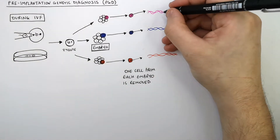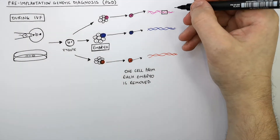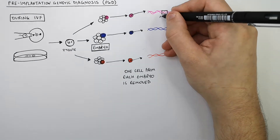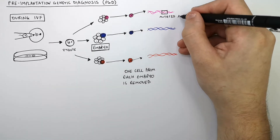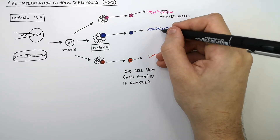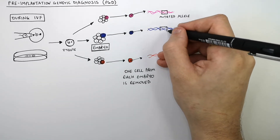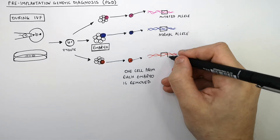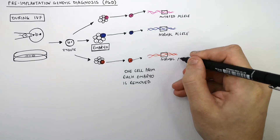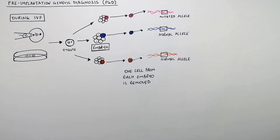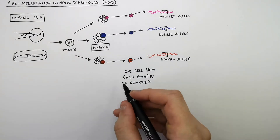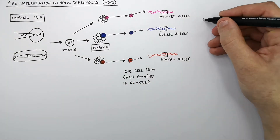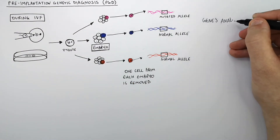And in this cell from this embryo, the DNA shows a mutated allele. Whereas in this cell from this embryo, there is a normal allele. And there's a normal allele in this embryo too. So they remove a cell from each embryo and the genes are analyzed.